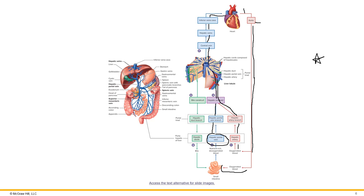Bile is produced in the liver by hepatocytes. It is collected via small bile tubes called bile canaliculi, which are tiny green tubes within the lobules. These are collected by branches of the hepatic ducts that merge with the right and left hepatic ducts. Bile exits the liver through the system of bile ducts discussed earlier and is purged into the duodenum via the major duodenal papilla.